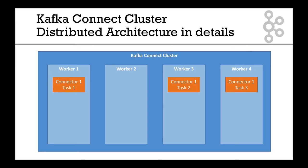Here is my first connector. My first connector is made of three tasks: task one, task two, and task three. As you can see, they're spread amongst your workers — worker one, worker three, and worker four. That's just an example of what could happen in real life.